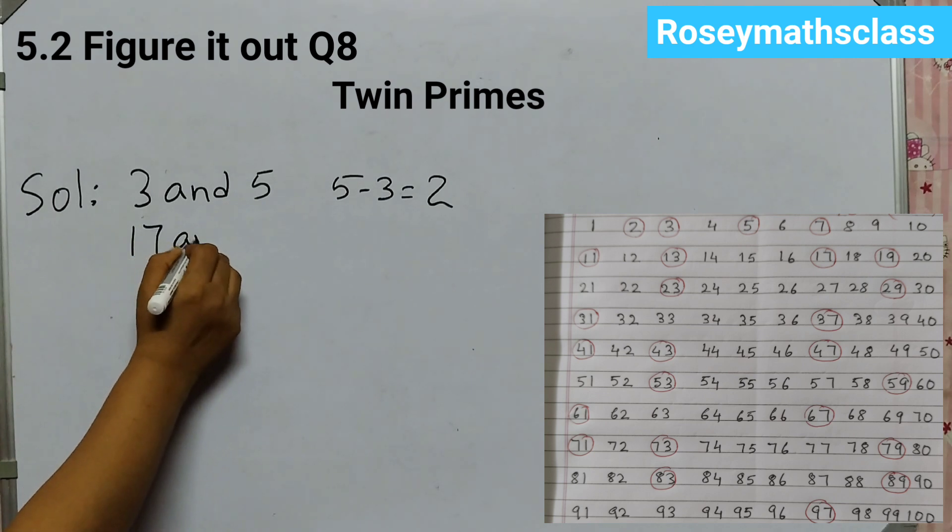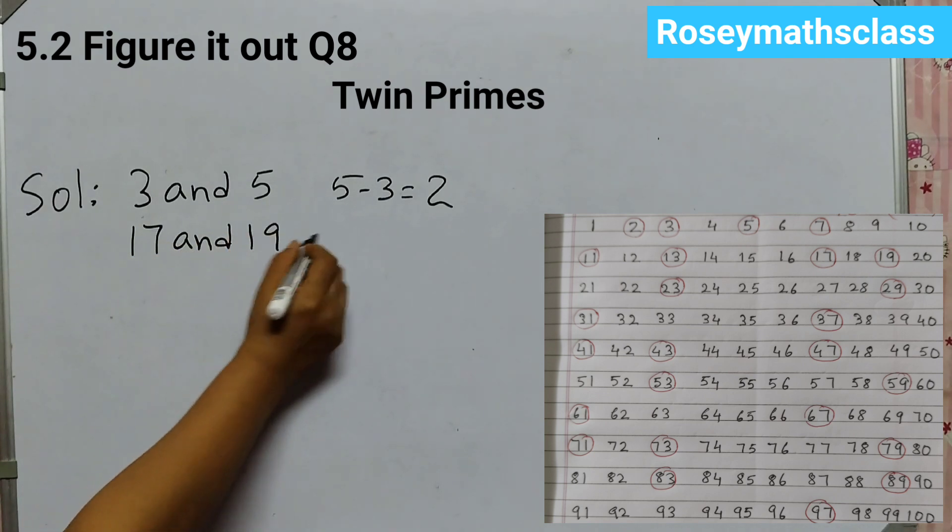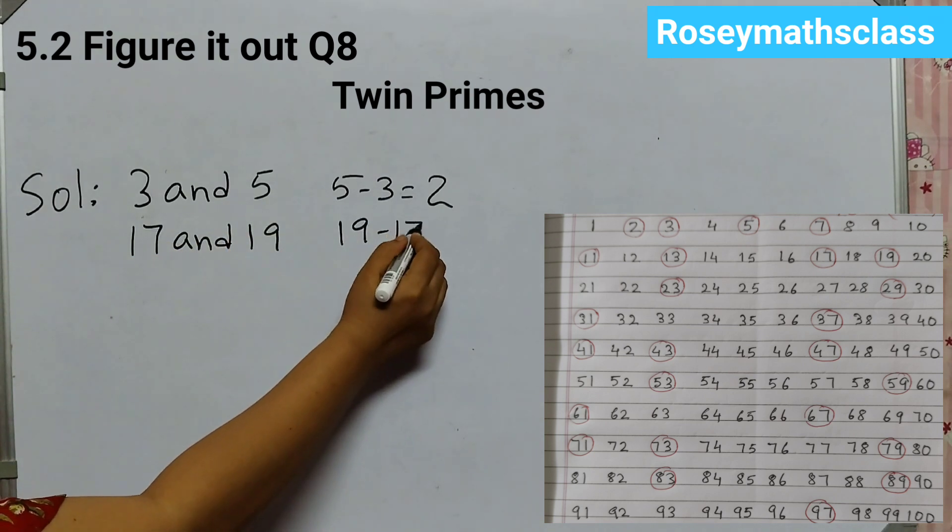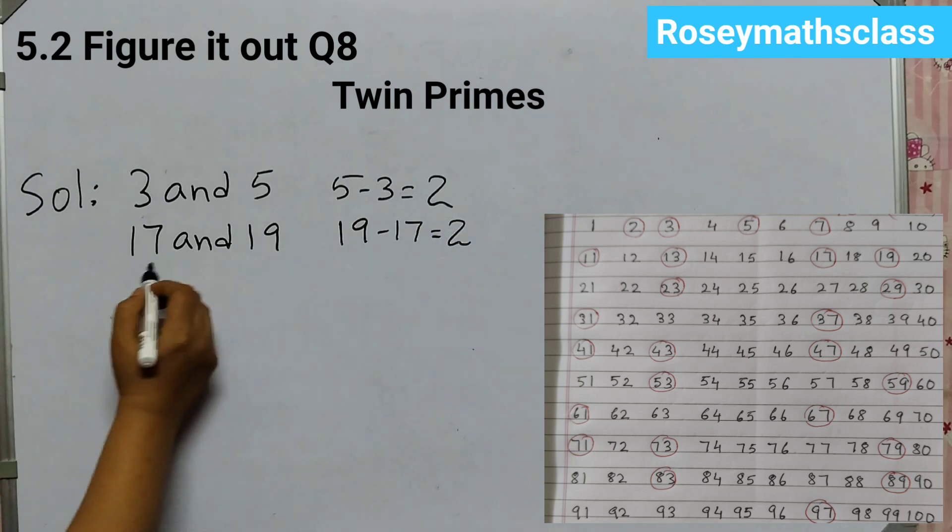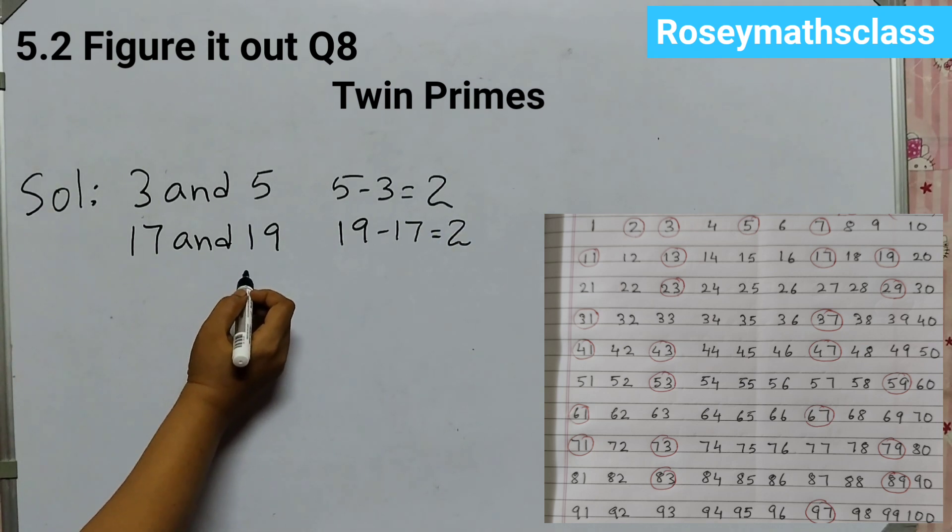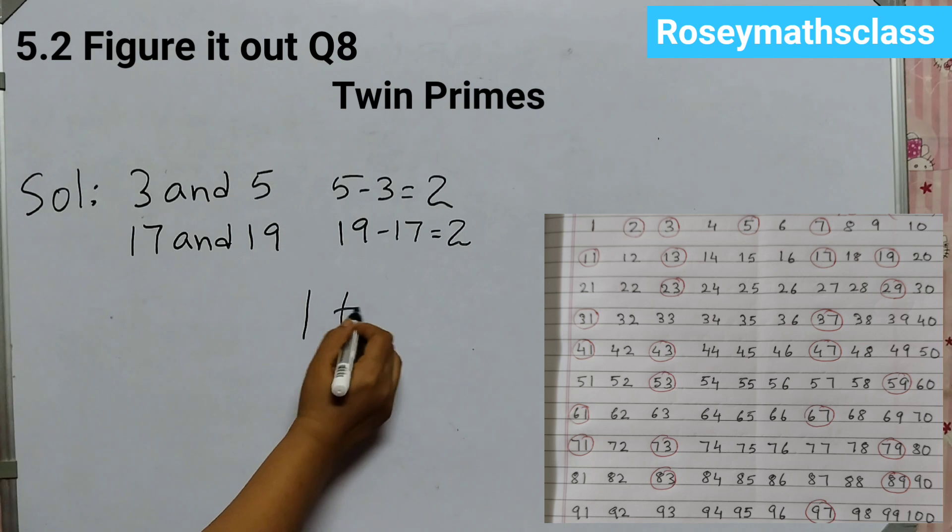Which means 3 and 5 are twin primes. Similarly, one more example is given: 17 and 19. 19 minus 17 is equal to 2. So again, these two are twin primes. So we need to find out all the twin primes between 1 to 100.